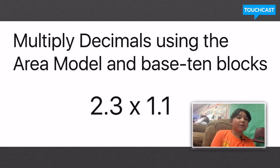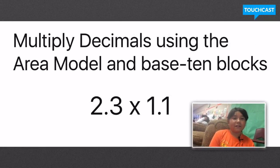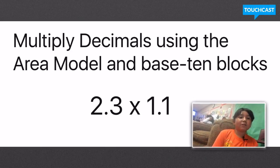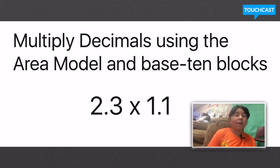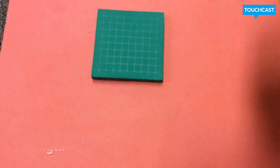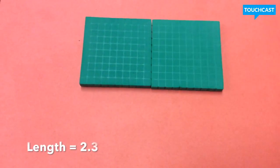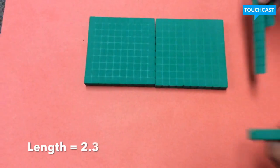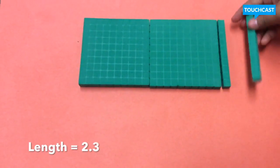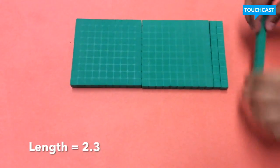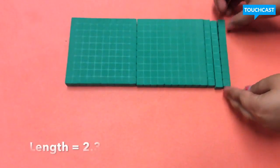The first step is to write down your question, which is 2 and 3 tenths times 1 and 1 tenth. The second step is to build the area model with your base-10 blocks. That's all you have to do. Then you can visit the next step.